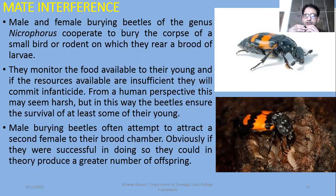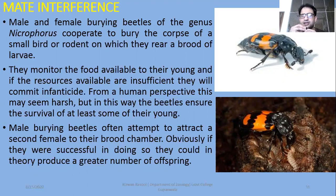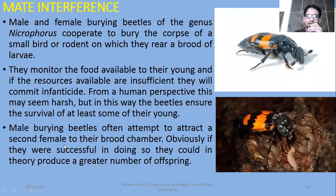Another concept in the case of sexual conflict is mate interference. Male and female burying beetles of the genus Nicrophorus cooperate to bury the corpse of a small bird or rodent on which they rear a brood of larvae. They monitor the food available to their young, and if the resources are insufficient, they will commit infanticide and kill their young. From a human perspective this may seem harsh, but in this way the beetles ensure the survival of at least some of their larvae. Male burying beetles often attempt to attract a second female to their brood chamber as well, which could in theory produce a greater number of offspring.